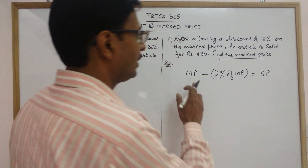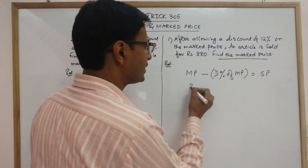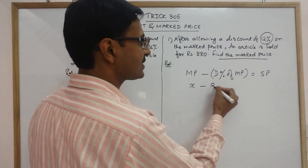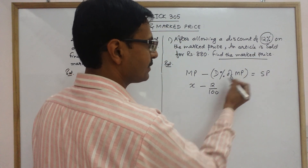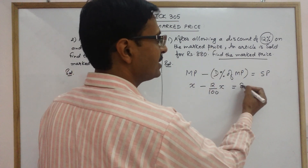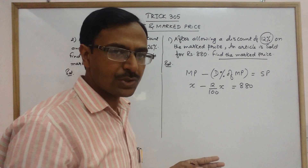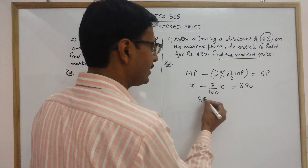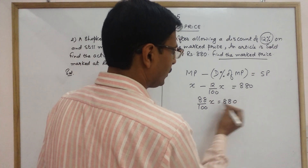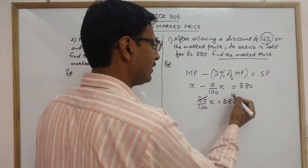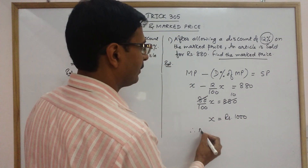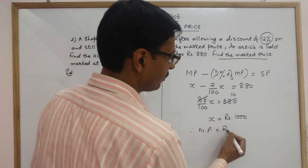Now, what is given in the question? We have to find the mark price — I will assume this as x. Discount percent is 12%, so 12% of mark price x gives the selling price of 880. So the equation is: (100 - 12) / 100 × x = 880, which is 88/100 × x = 880. Cross multiplying, you get rupees 1000. Therefore, the mark price of the article is rupees 1000.